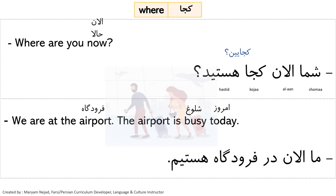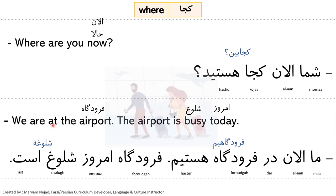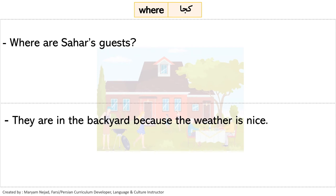The formal answer: 'ma al-an dar furudga hasteem; furudga emruz shuluq ast'. The contraction of 'furudga hasteem' is 'furudgaim', and 'shuluq ast' contracts to 'shuluqe'. Also, in informal speech we don't need to say the preposition 'dar', so the informal sentence is: 'ma al-an furudga haeem; furudga emruz shuluqe'. The last 'koja' example asks: 'Where are Sahar's guests?' — 'mehman' (guest), informally 'mehmoon'.